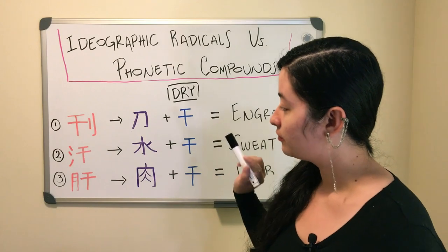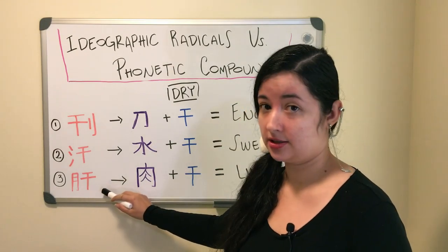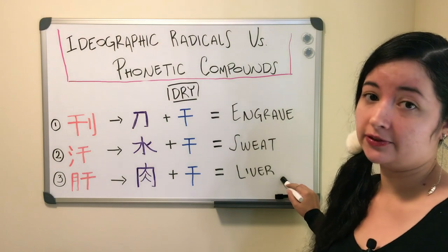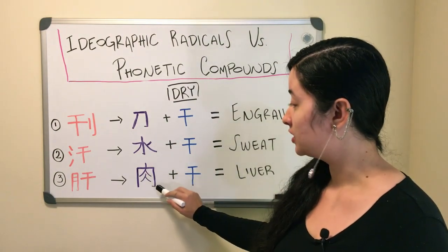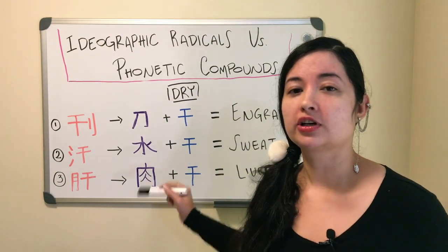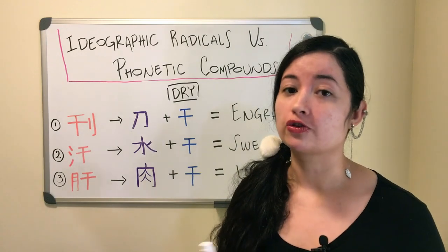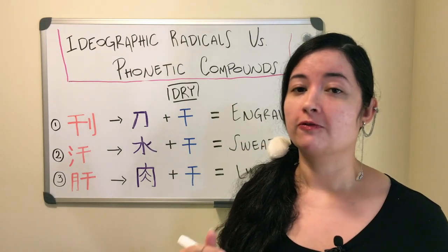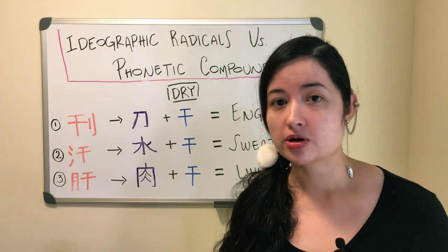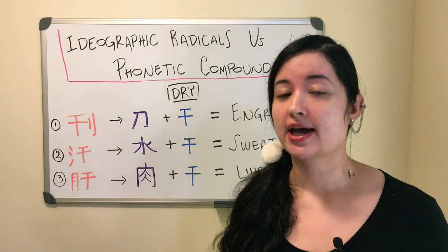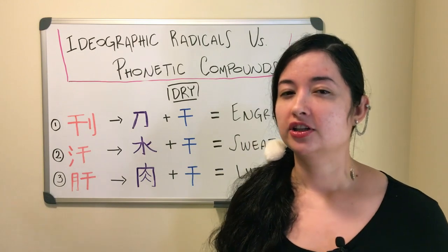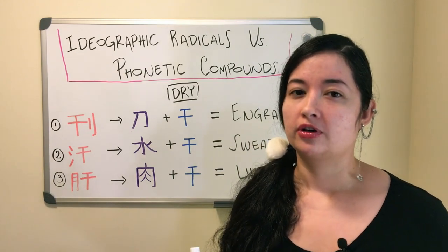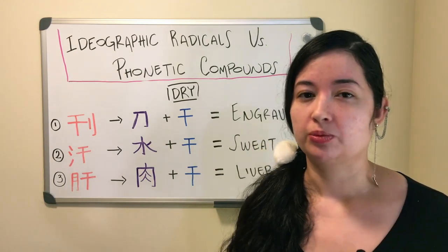For the last one we have this kanji which means liver. The radical for this kanji is the radical for meat or flesh. So we see a lot of relationship between flesh and body parts or organs. You will often see this radical whenever it has some relationship with body parts.